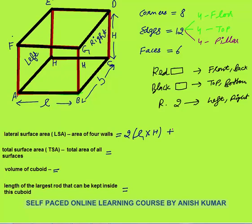For the left and right faces, the area of the right face is B into H. Since the left and right surfaces are congruent, their combined area is twice of B into H. So the lateral surface area of the cuboid is 2LH + 2BH.